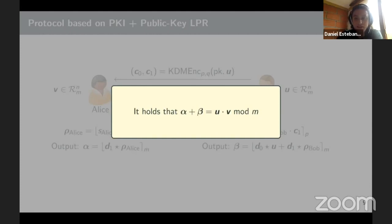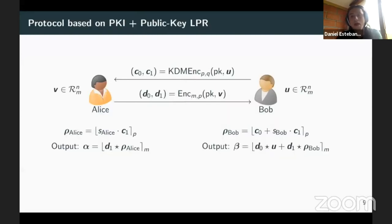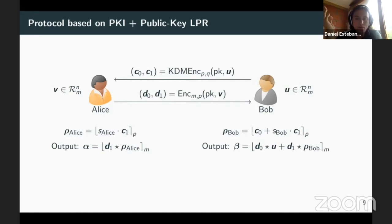Something important: although this protocol looks like two rounds — Bob sends a message to Alice, Alice sends a message to Bob — it is actually one round, because the message Alice sends back is not dependent on Bob's first message. It is just an encryption of Alice's input, which she can send any time. So both messages can be sent simultaneously, making this a one-round protocol, which is very good for high-latency networks.